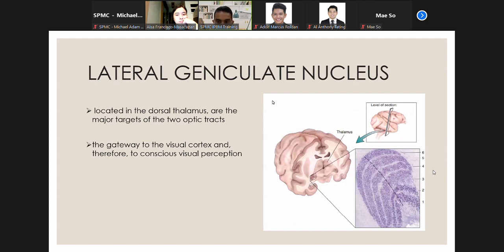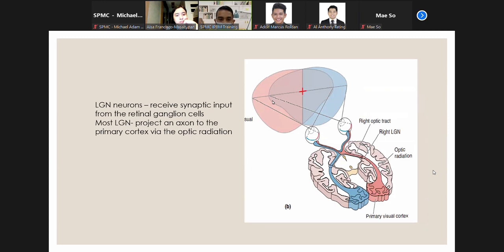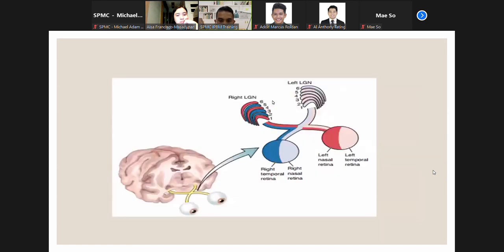This is the LGN viewed in cross-section. Each LGN appears to be arranged in six distinct layers: one, two, three, four, five, six. It is located in the dorsal thalamus and is the major target of the optic tract. Most of the optic tracts go to the LGN. The LGN is the gateway to the visual cortex and therefore to conscious visual perception. The right LGN receives information about the left visual field, which is viewed by the nasal left retina and the temporal right retina.